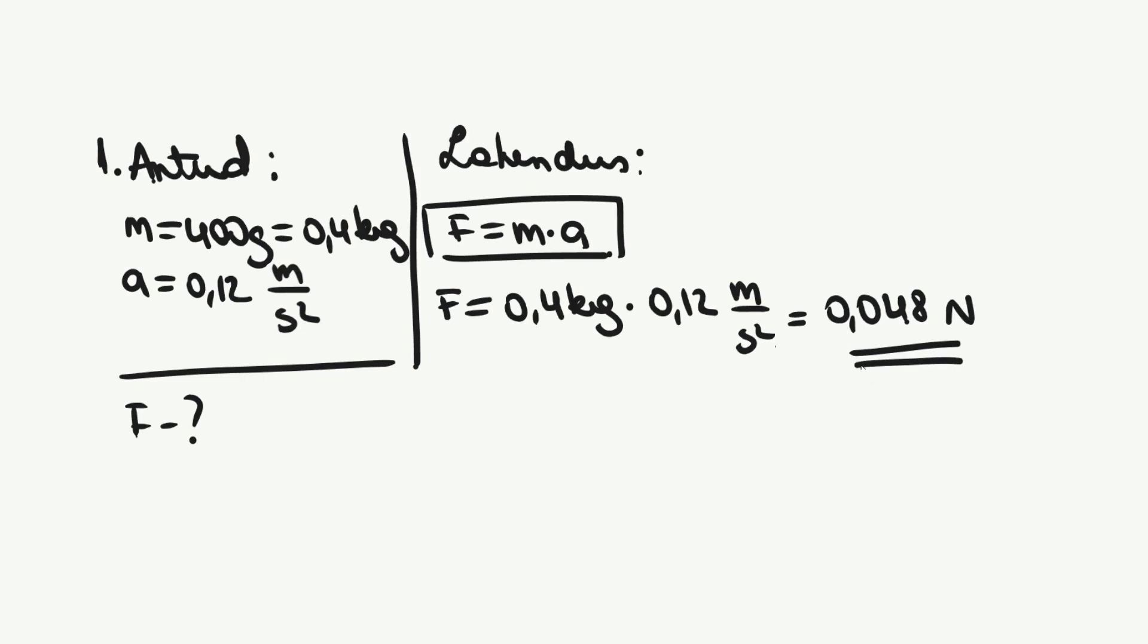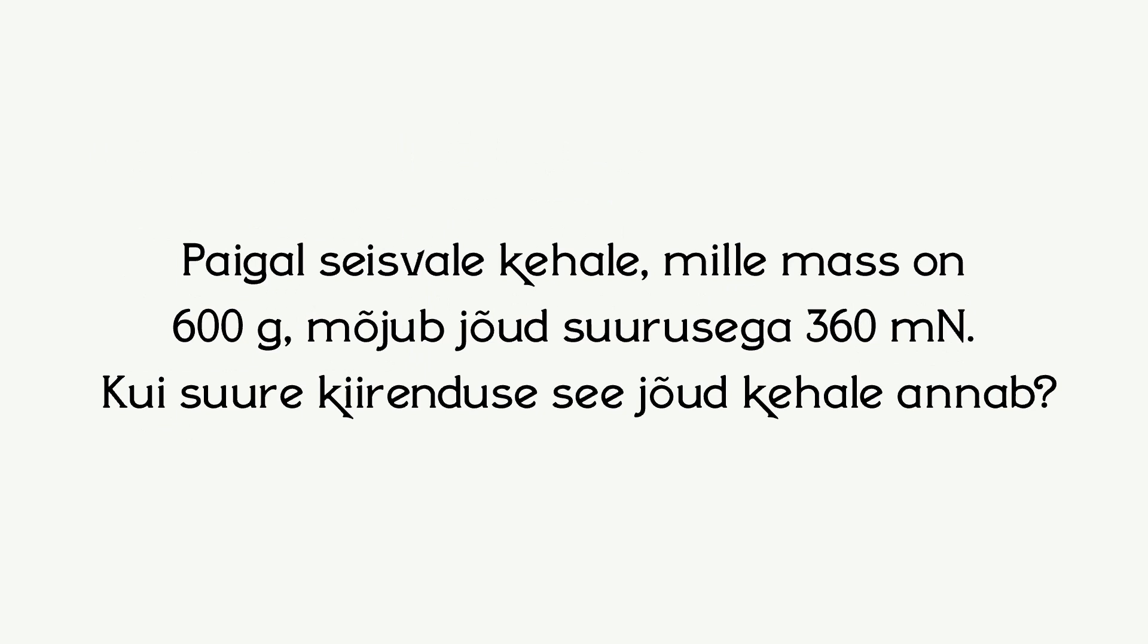Lahendame järgmise ülesande. Paigal seisavle kehale, mille mass on 600 grammi, mõjub jõud suurusega 360 milliNewtonit. Kui suure kiirenduse see jõud kehale annab? Pane video pausile ning lahenda ülesanne ise iseseisvalt. Seejärel vaata videot lahenduskäigu kinnistamiseks edasi ja kontrolli oma vastust.